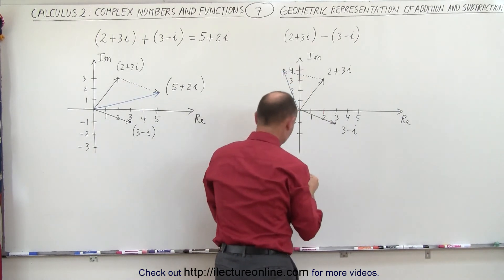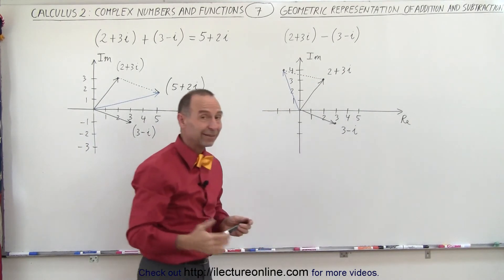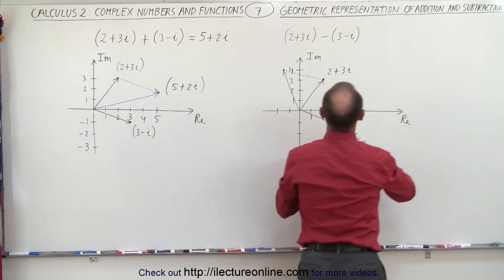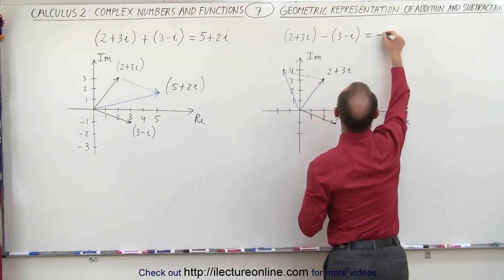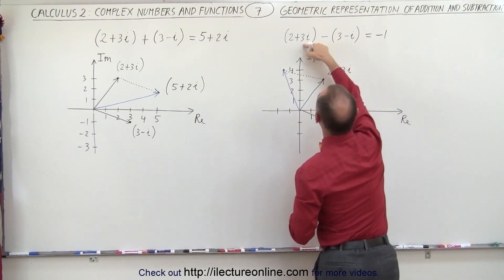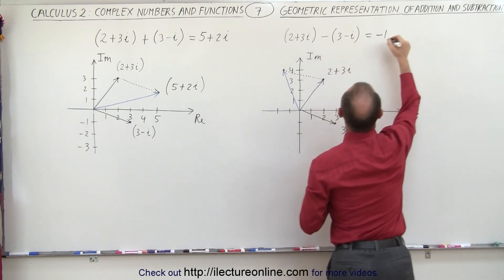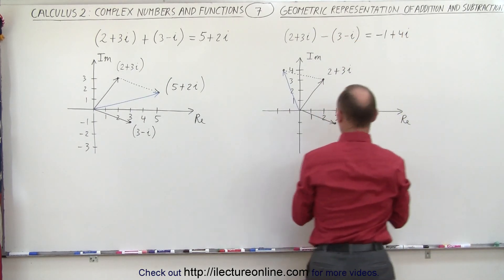This should be our resultant of the subtraction. Let's see if we get the same result when we do it numerically. So this becomes 2 minus 3, which is minus 1 for the real part, and 3 minus a minus 1, which is plus 4i for the imaginary part.